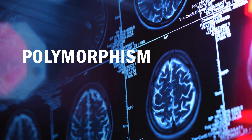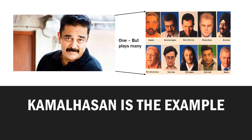What is Polymorphism? 'Poly' means many, 'morph' means changing the face. One thing appearing as multiple things as per requirement is called polymorphism. Kamal Haasan is the best example — a legend who played 10 different roles in the movie Dasavataram. One person appearing as 10 different characters is polymorphism.